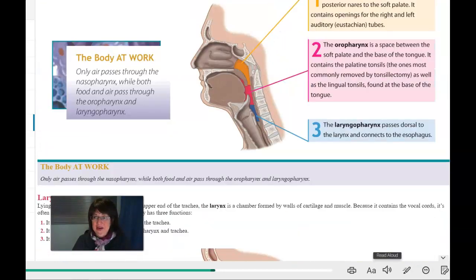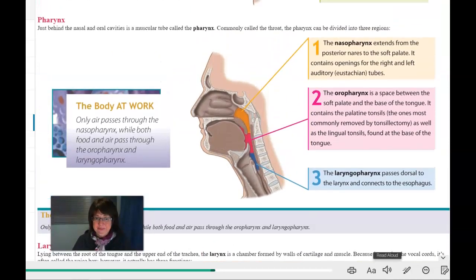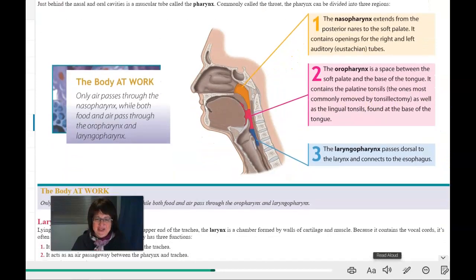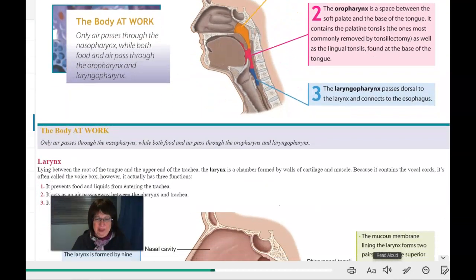We talked about the pharynx. The nasal pharynx is only where air passes. The food and air will pass through the oral pharynx and the laryngopharynx. And structurally they're a little different, but not enough that we need to take time and point it out.